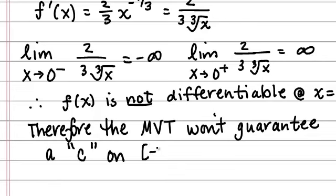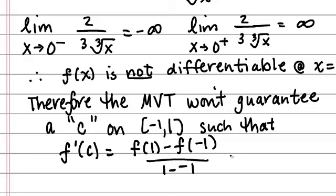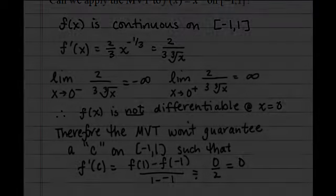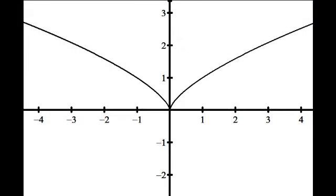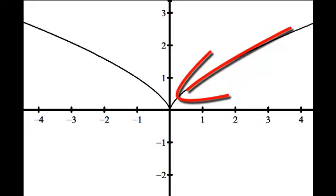Looking at the graph, there's no c value between negative 1 and 1 such that the slope at c equals the slope over the whole interval. The average rate of change is 0 over 2, which is 0. As we can see, there's no point between negative 1 and positive 1 where the slope is 0 — the slopes are getting more negative approaching from the left and more positive approaching from the right, so we never reach a slope of 0.